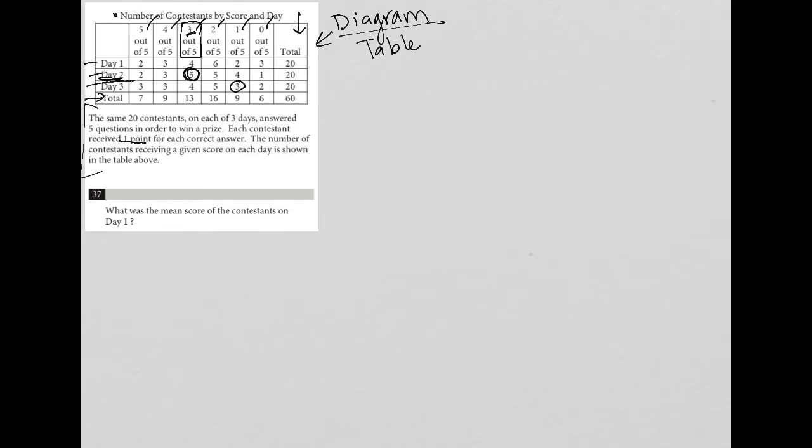So question 37 says, what was the mean score of the contestants on day one? Well, let's figure out, first of all, what were the scores for the contestants on day one? So day one, obviously, is our first row here. I'm not going to need to look at the total there.